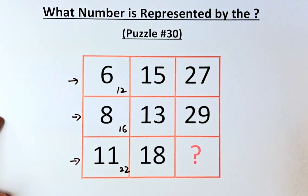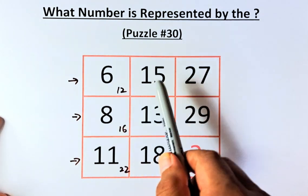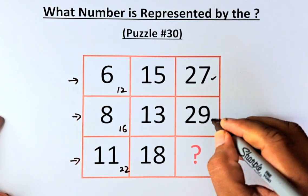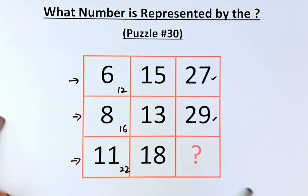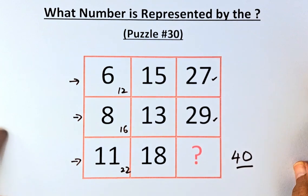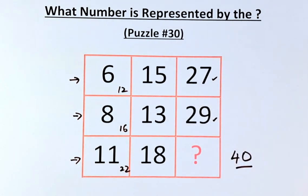So the next thing to do is we're just going to add. 12 plus 15 is 27. 16 plus 13 is 29. And 22 plus 18 is going to be 40. So the first solution is going to be 40.